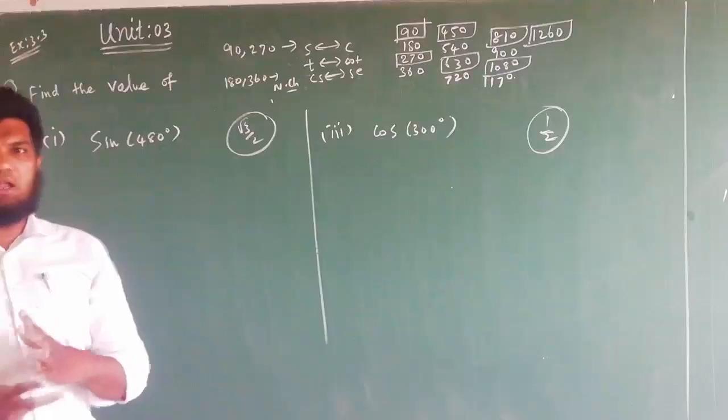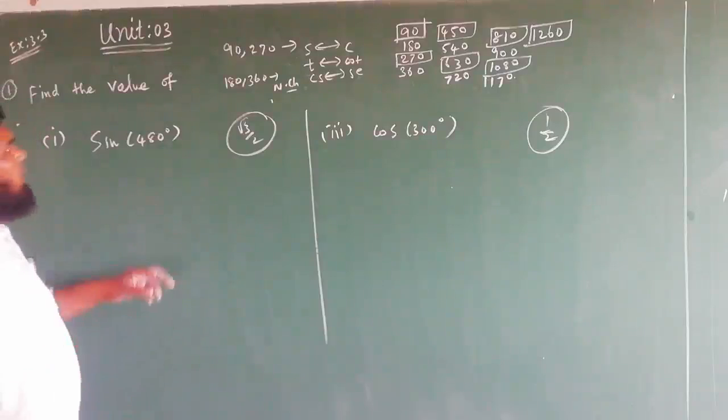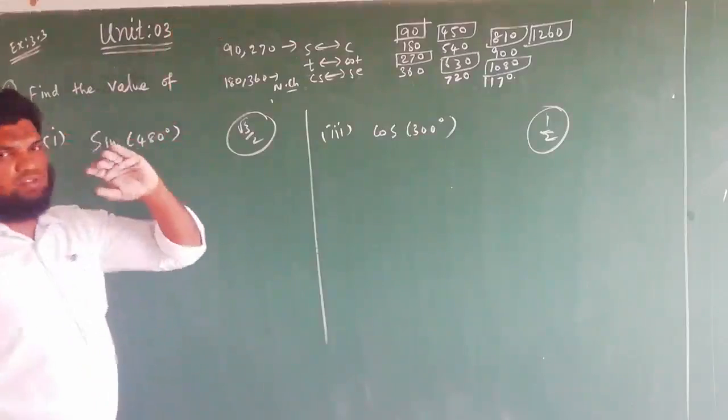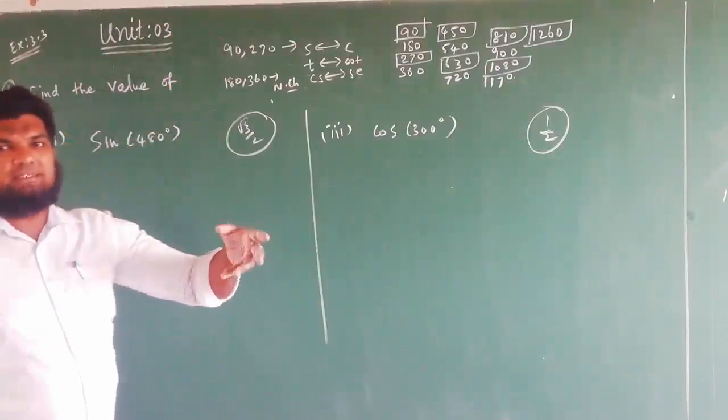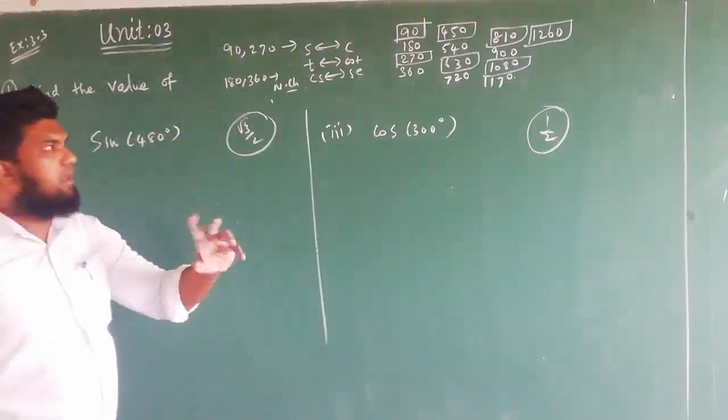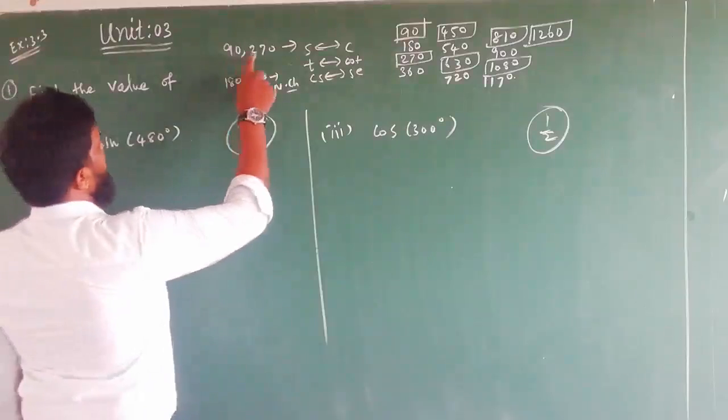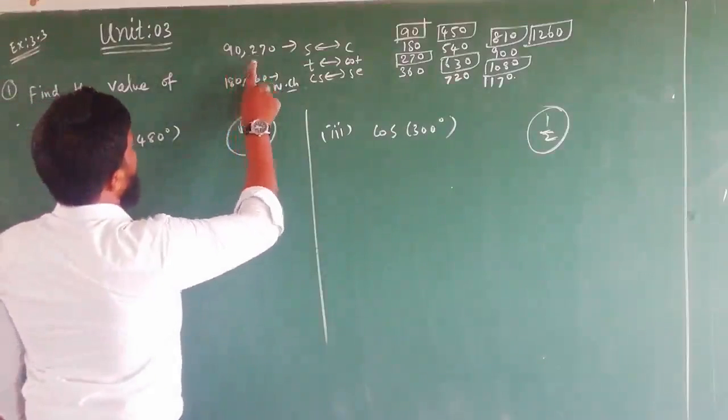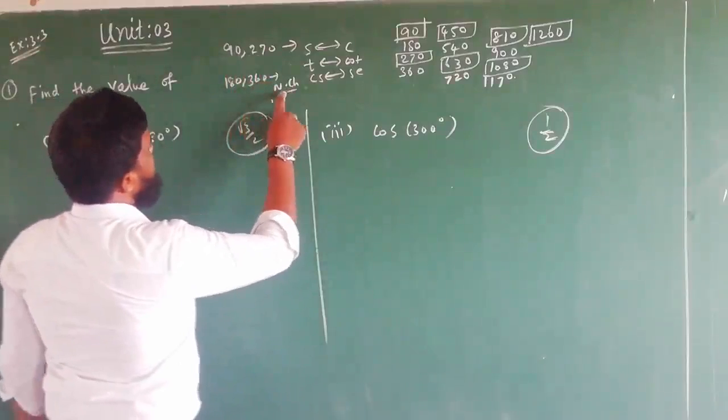We will see that this is important. First, 90 plus theta, 270 plus theta, 180 minus theta, 90 minus theta - you need to be able to use these formulas. Then 90 and 270 are odd numbers. Even numbers get no change.